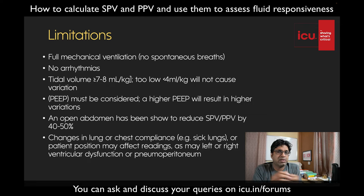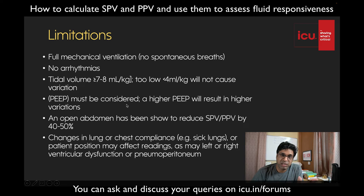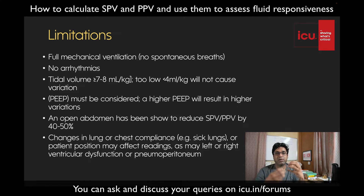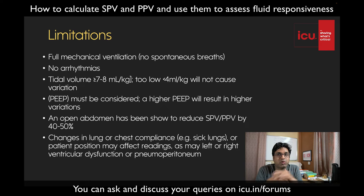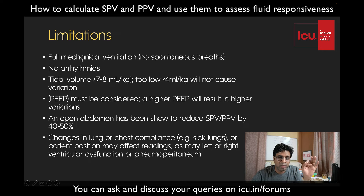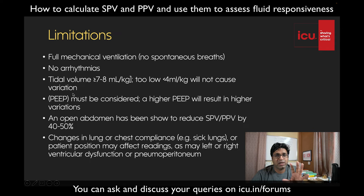With low tidal volume you may think the patient is well-filled when they actually require fluid. High PEEP similarly increases variation, so that must be considered. If the patient is having open abdominal surgery, ventilation pressure dissipates into the abdomen, reducing variation by 40 to 50 percent — so even a fluid-responsive patient may not show much variation. Changes in lung compliance or resistance, such as ARDS or ILD, can also alter results. Ideally the patient should be ventilated, sedated, and paralyzed, with no arrhythmia and tidal volume and PEEP in a fairly normal range.